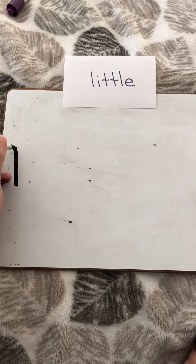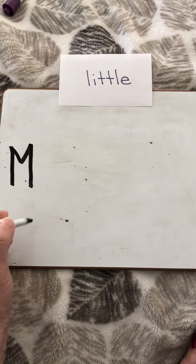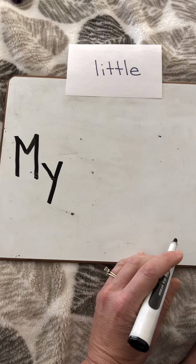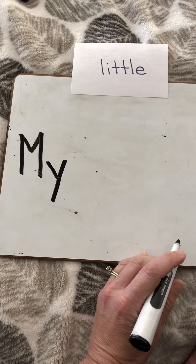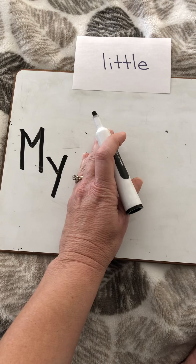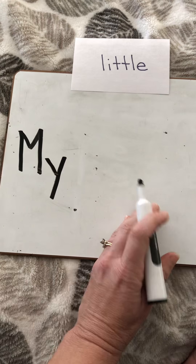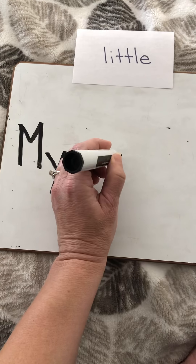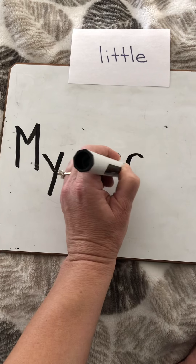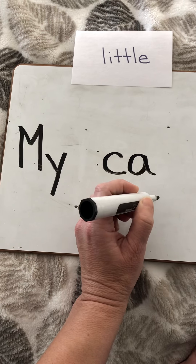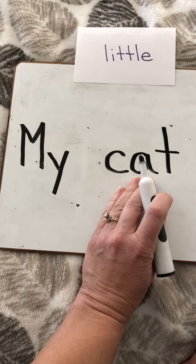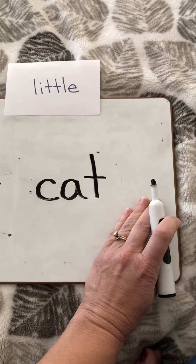My — capital M, because it's the beginning of a sentence. Y breaks the rules and goes past that line if you have lined paper. My cat. I'm going to make a space, and I'm going to sound out cat because that's a three-letter word and I can sound it out on my arm. K is a C: C-A-T. My cat is.